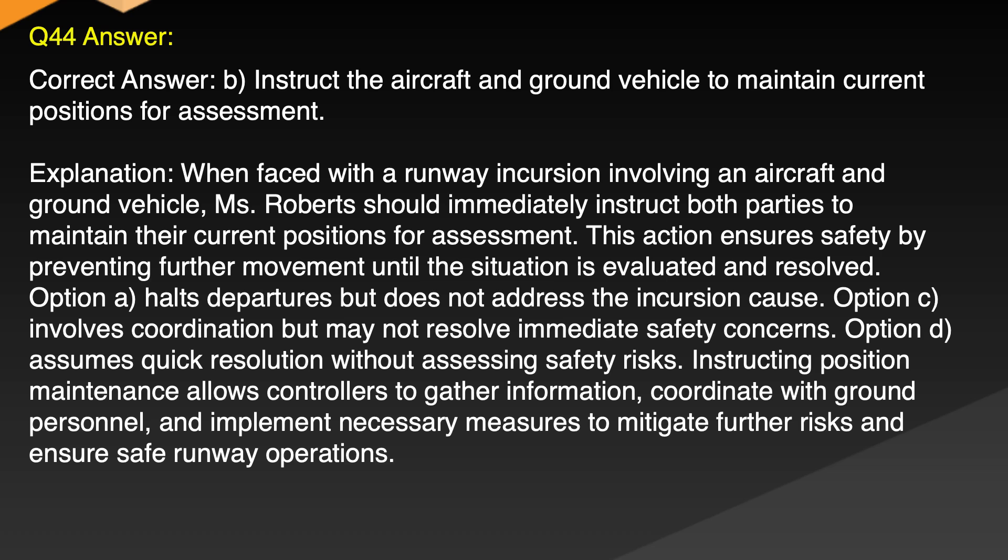Explanation: When faced with a runway incursion involving an aircraft and ground vehicle, Ms. Roberts should immediately instruct both parties to maintain their current positions for assessment. This action ensures safety by preventing further movement until the situation is evaluated and resolved. Option A halts departures but does not address the incursion cause. Option C involves coordination but may not resolve immediate safety concerns. Option D assumes quick resolution without assessing safety risks. Instructing position maintenance allows controllers to gather information, coordinate with ground personnel and implement necessary measures to mitigate further risks and ensure safe runway operations.